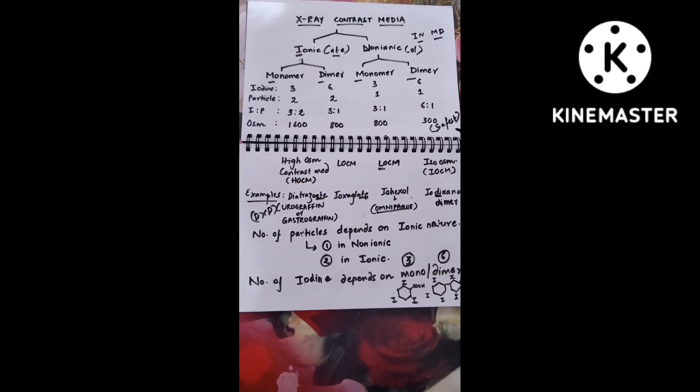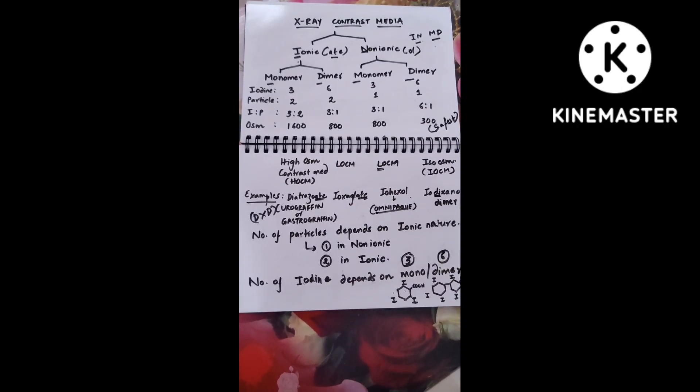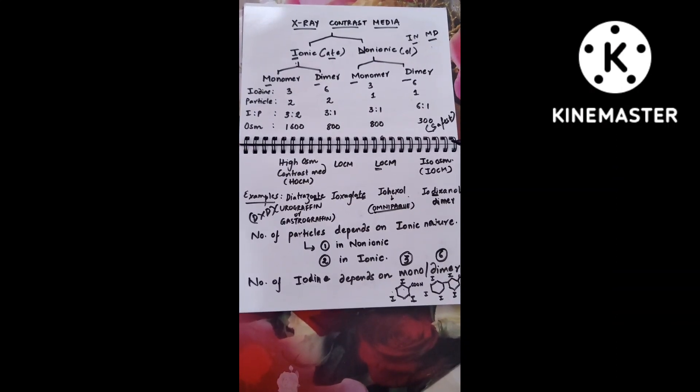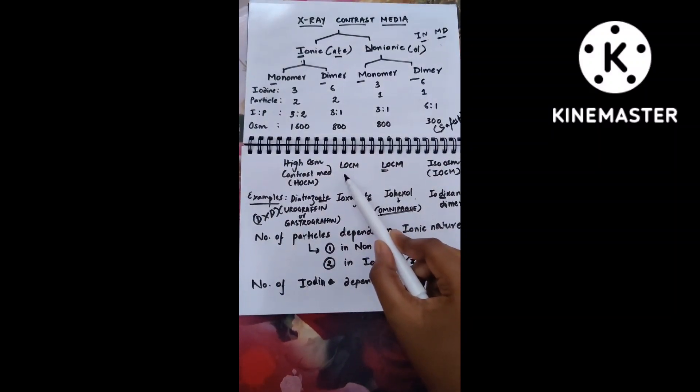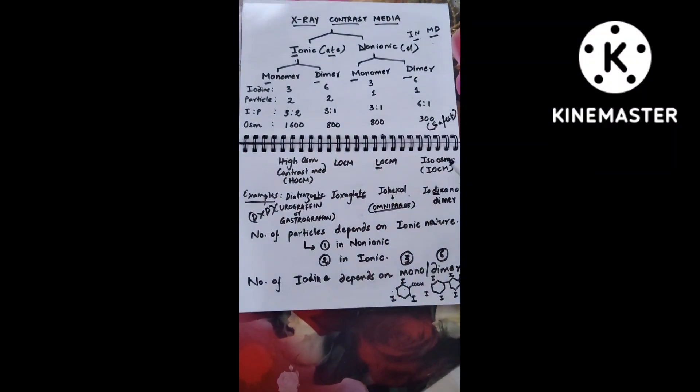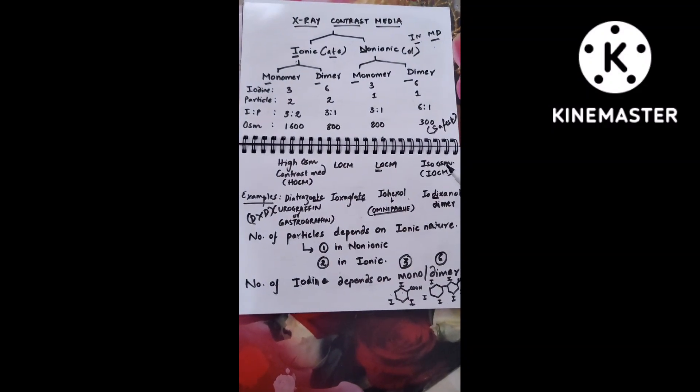When they ask which of the following has the least osmolarity, we tend to answer low osmolar because the word has 'low' in it. But the actual thing is iso-osmolar has the least among all classes, that is 300. Keep that thing in mind.